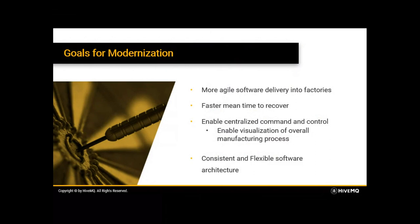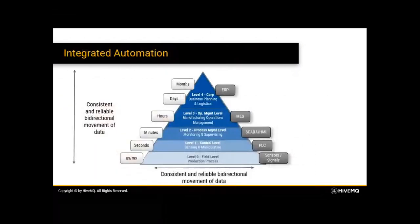Investing in modern software architecture allows organizations to introduce traditional IT technology and processes into OT. The goal for modernization is integrated automation. There is a hierarchy from level zero — the automation level — all the way to the top, which is business planning and logistics, where the system is ERP and finance. Before that is MES, the manufacturing execution system, warehousing, track and trace. Going down is SCADA and HMI, and finally at the bottom are sensors and signals. Most of the time, all this data is siloed, which is why achieving modernization means achieving integrated automation across the factory.